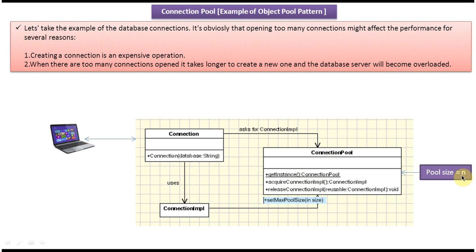If we define the pool size as 10, then only 10 ConnectionImplementation objects will be held in the connection pool. When a client requests a connection object, it calls the ConnectionPool object and gets the singleton instance. Then it calls the acquireConnectionImplementation method, asking the pool to give it a ConnectionImplementation object.